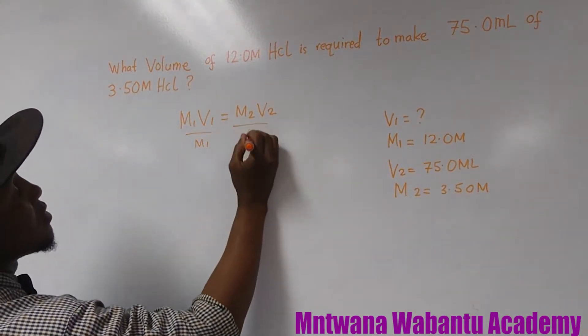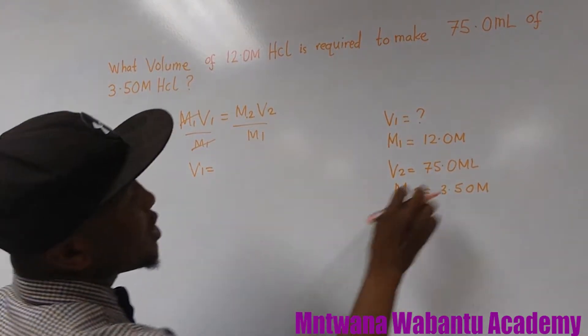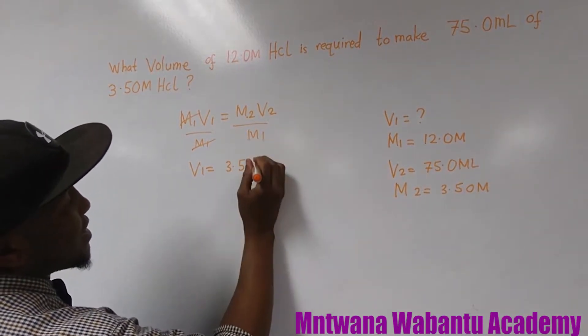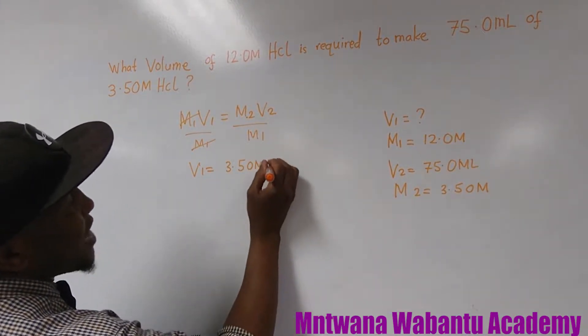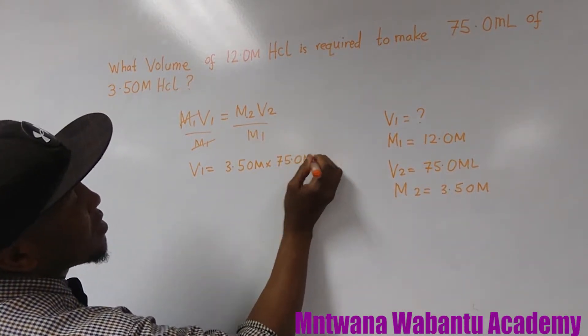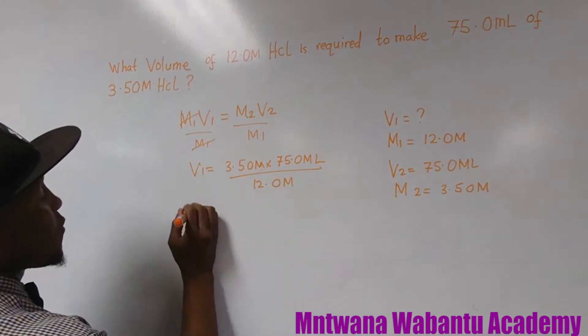So divide by M1 throughout. So cancel, cancel. So V1 equals, we have M2. What is M2? 3.50 molarity. And then you multiply by volume 2, 75.0 milliliter. And then divided by M1. M1 equals 12.0 molarity.